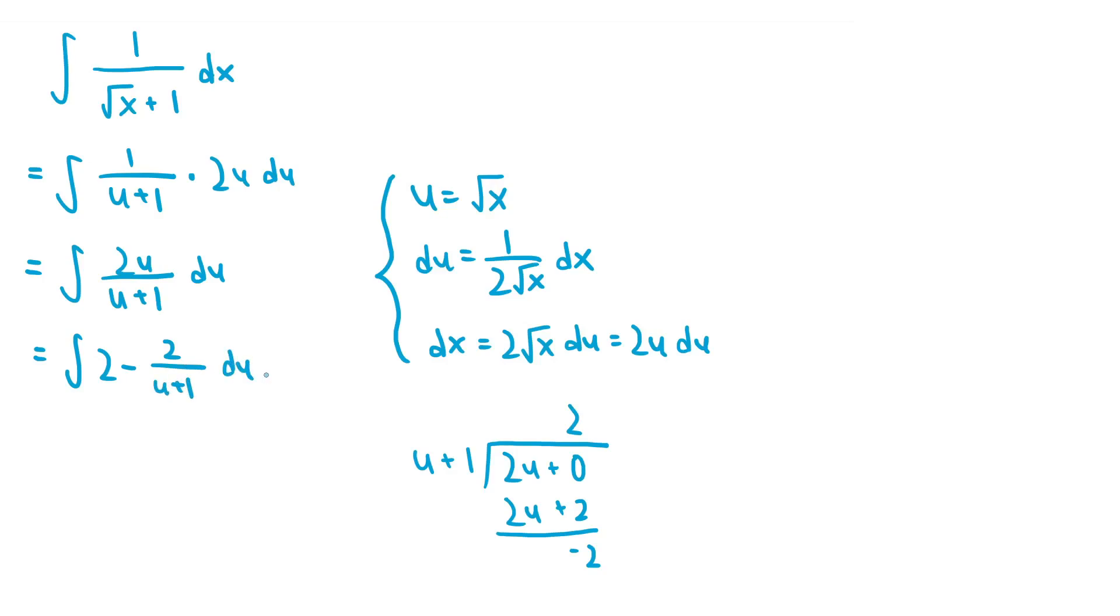What we did was rewrite the rational function as the quotient resulting from 2u divided by u plus 1, which is 2, plus the remainder divided by the denominator, which is negative 2 over u plus 1. So this becomes the integral of 2 minus 2 over u plus 1. So we can do these integrals separately.